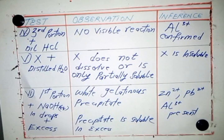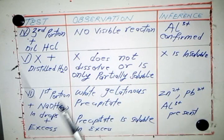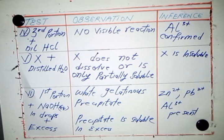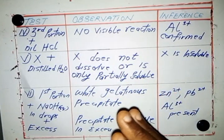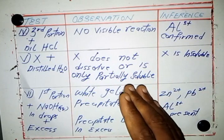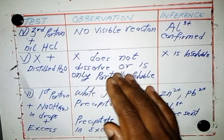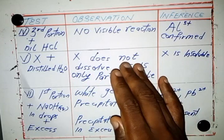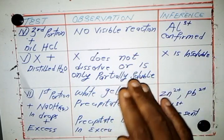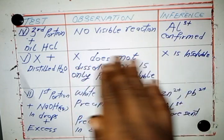For X plus a certain amount of distilled water, the observation is that X does not dissolve, or is only partially soluble. The inference is that X is insoluble. Zinc carbonate is insoluble in water, though some books report it as partially soluble. Whether you say it does not dissolve, is insoluble, or is partially soluble, you are still correct — just make sure your inference states it is insoluble.